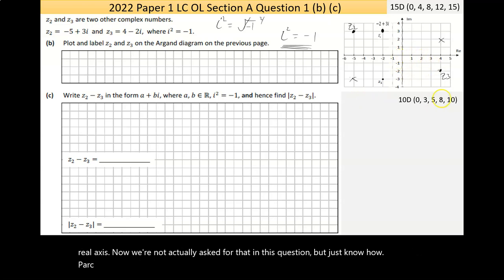Just what I have here, if I was looking for the conjugate of Z2, it's directly below it. So it would be minus 5 minus 3i. The conjugate of Z3 would be up here, and that would be 4 plus 2i. They're always directly above, the same distance away from the real axis. We're not actually asked for that in this question, but just no harm. Now part C then says write Z2 take away Z3.